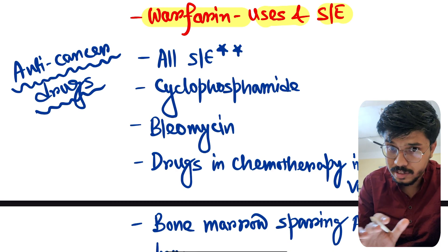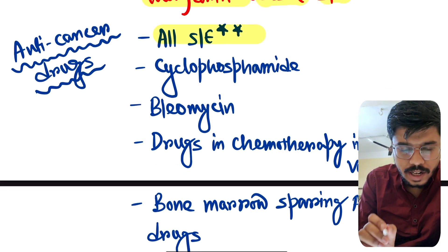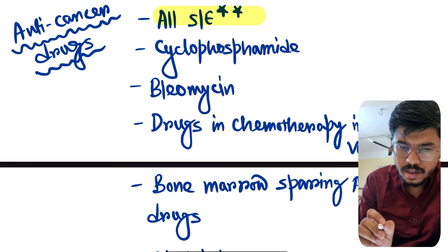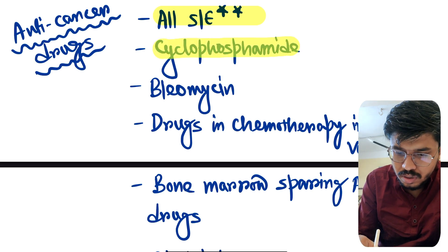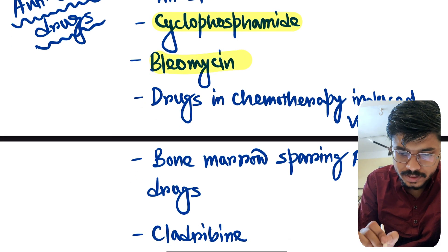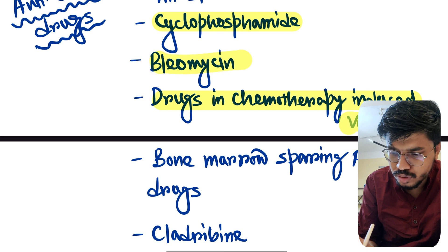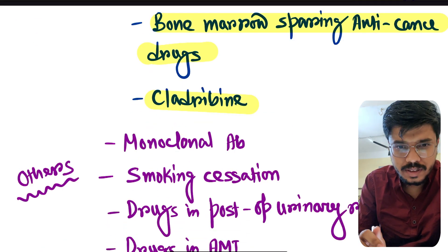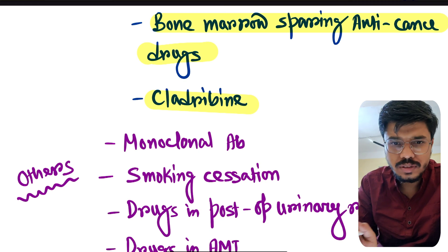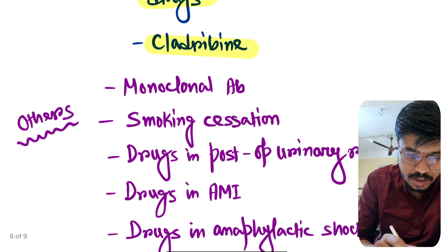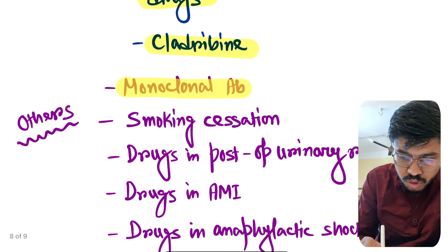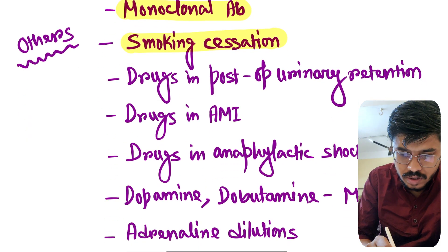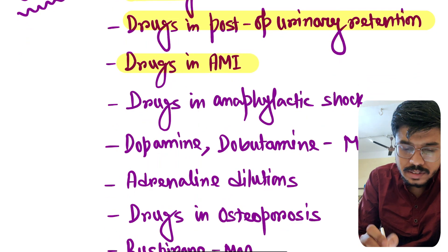In anti-cancer drugs, please read carefully the classifications. All the side effects from anti-cancer drugs are important — you have to read all the side effects. Important topics: cyclophosphamide, bleomycin, drugs in chemotherapy-induced vomiting, bone marrow-sparing anti-cancer drugs. Cladribine is the anti-cancer drug of choice in hairy cell leukemia. Monoclonal antibodies — again an important topic. Smoking cessation — important topic.